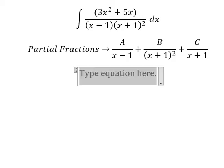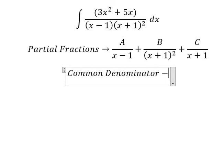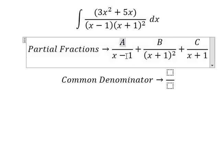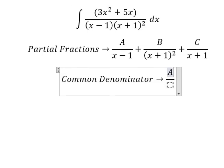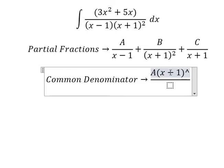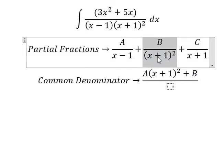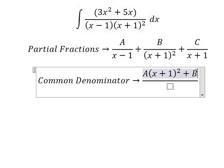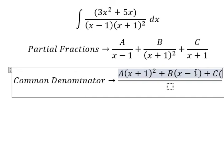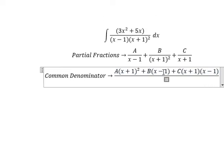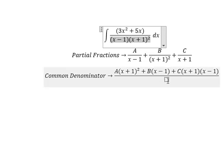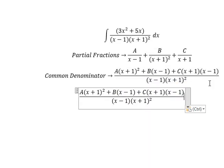Now we do common denominator. For this one, it's missing x plus 1 to the power of 2, so we need to multiply by x plus 1 to the power of 2. For this one, it's missing x minus 1. For C, it's missing x plus 1 and x minus 1. This one is similar. Now we need to expand.